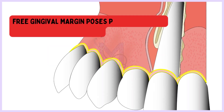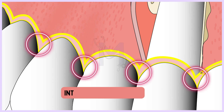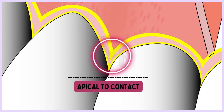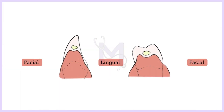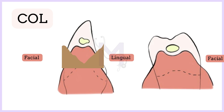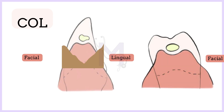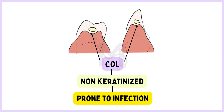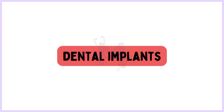In a healthy mouth, the free gingival margin courses parallel to the cementoenamel junction. The interdental papilla is the gingiva that fills the interproximal space just apical to the contact area. When viewed in the labio-lingual section, the gingiva assumes a concave form; this is termed the col. It is basically a valley-like depression that connects the facial and the lingual papilla and is not visible clinically. The col is non-keratinized and therefore more prone to infection. That is why gingivitis is said to start in the interproximal area.